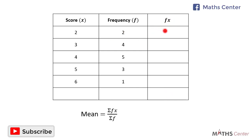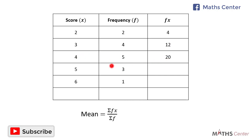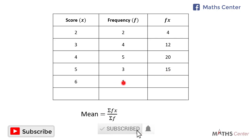To get the first fx value we multiply the first f value by the first x value. The first f value is 2 and the first x value is 2, so 2 times 2 gives us 4. Then 4 times 3 gives us 12. The next one is 5 times 4 which is 20. Then 3 times 5 which is 15, and the last one is 1 times 6 which is 6.